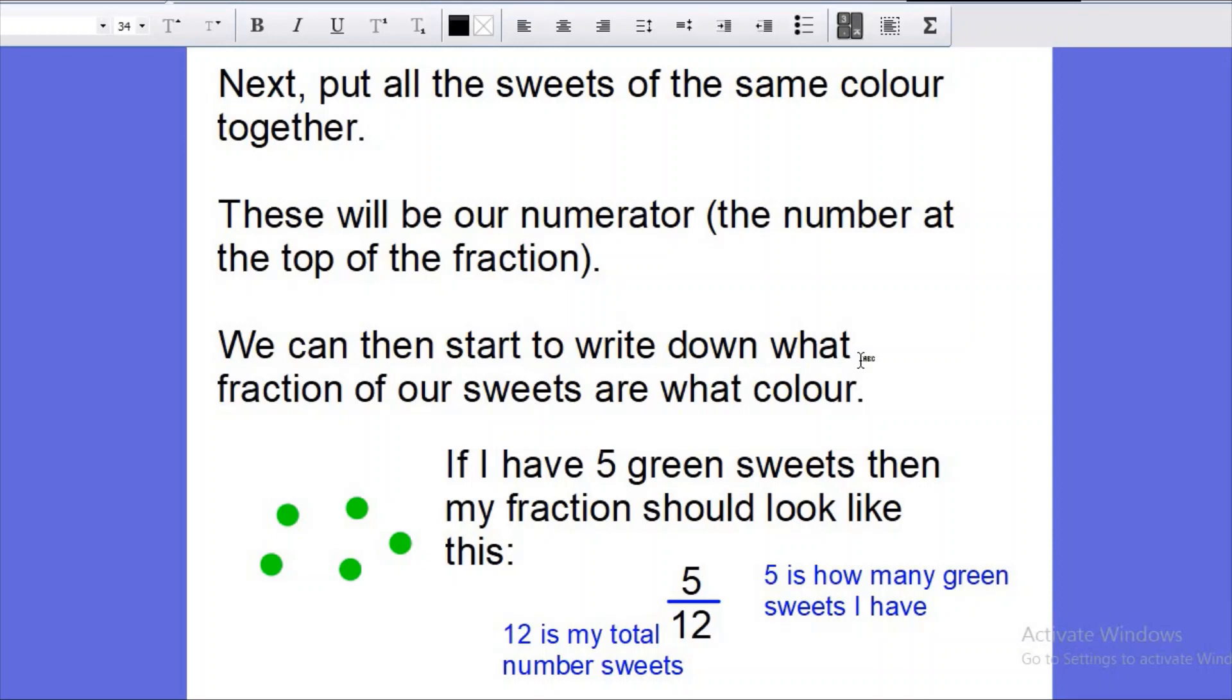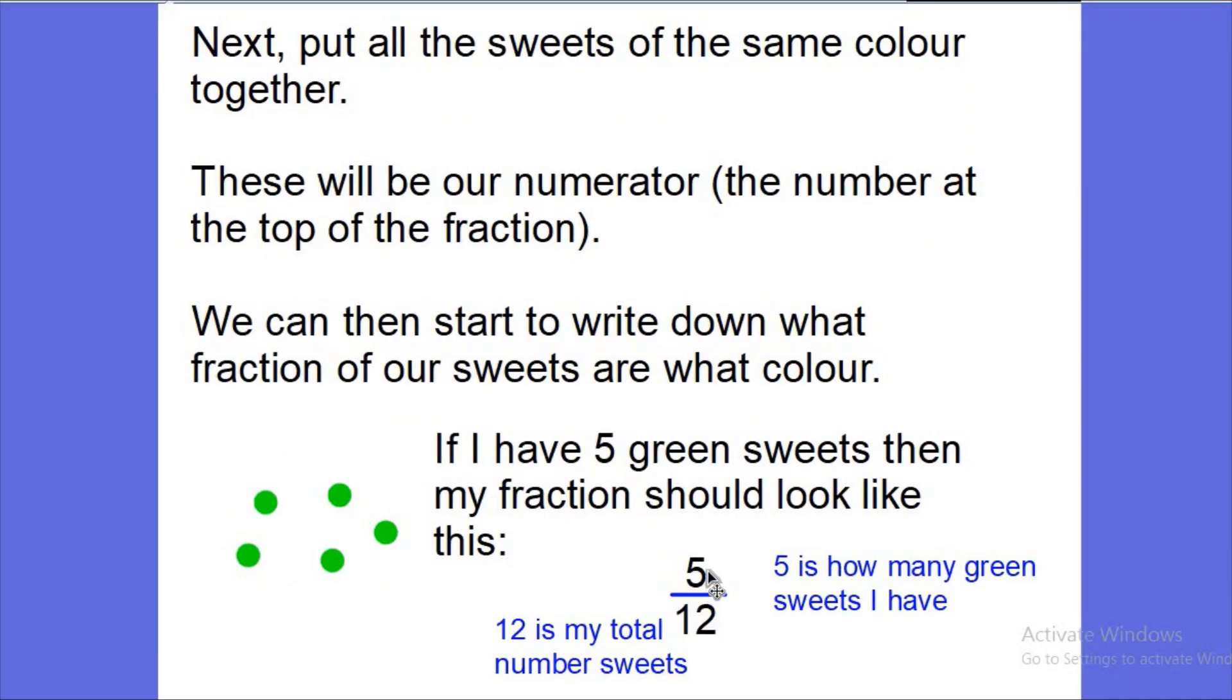You should have your table. Put all the sweets of the same color together—these will be our numerator. If you've got 12 sweets in total and one, two, three, four, five of them are green, then five-twelfths of your sweets are green. That's five green sweets out of a total of 12 sweets. It might be more or less. You might have a bigger denominator than me. That is entirely up to you. If you need to pause to write out your fractions, that's fine. I'll pause for a second and get you writing those out.